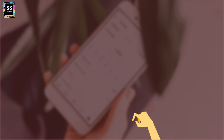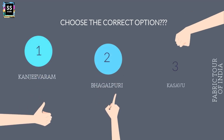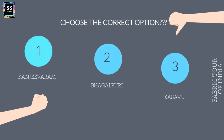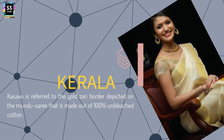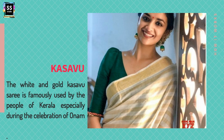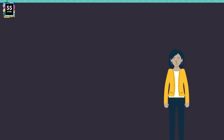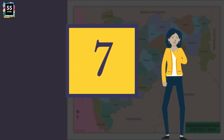State 6 on our list: Kerala. What is the famous textile of Kerala? The options are: Is it Kanjivaram? Is it Bhagalpuri? Or is it Kassavu? It is Kassavu. Kassavu refers to the gold zari border depicted on the Mundu saree, made out of 100% unbleached cotton. This white and gold Kassavu saree is famously used by the people of Kerala, especially during the celebration of Onam.